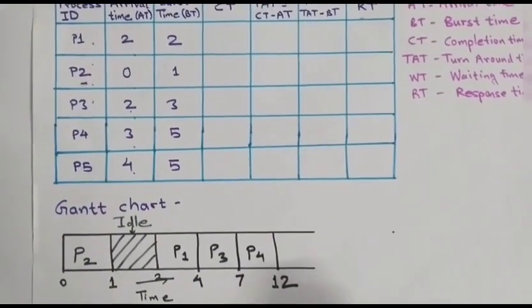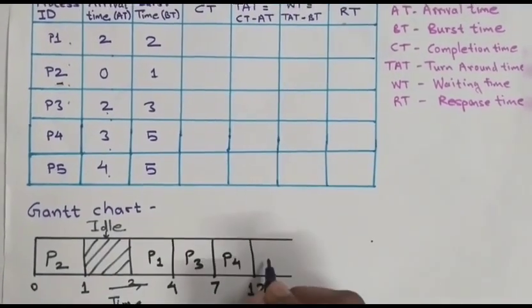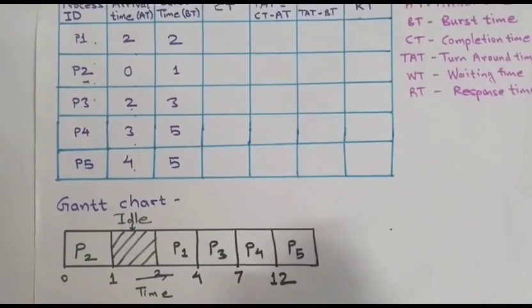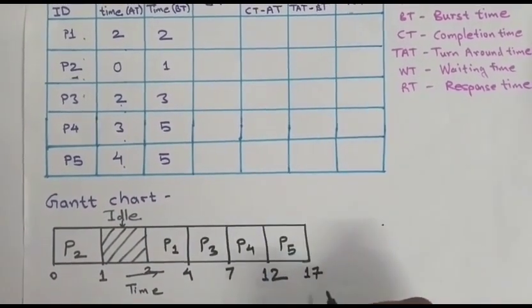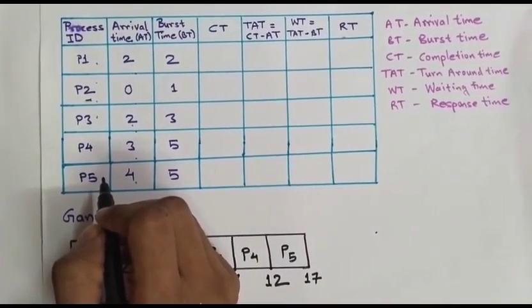Now P4 has been terminated. At last remaining is P5. 12 plus 5 is equal to 17. P1, P2, P3, P4, P5. All 5 have been executed.